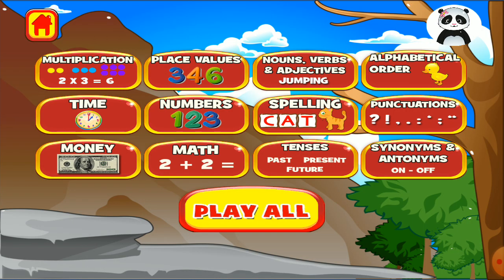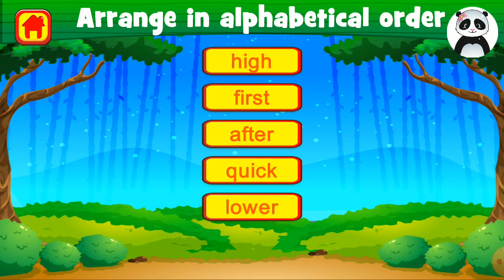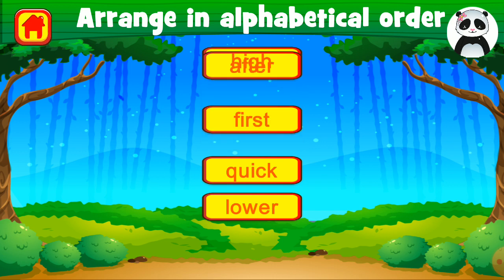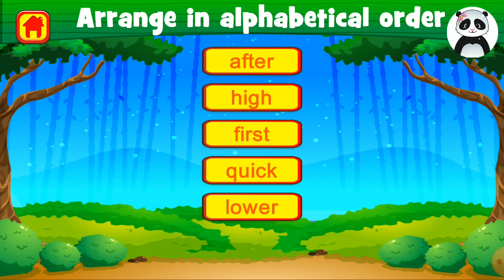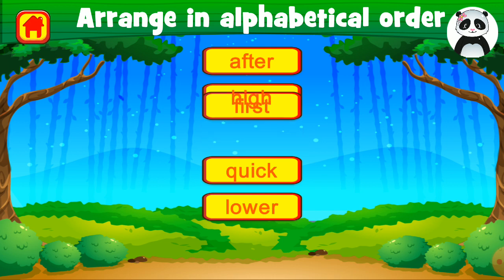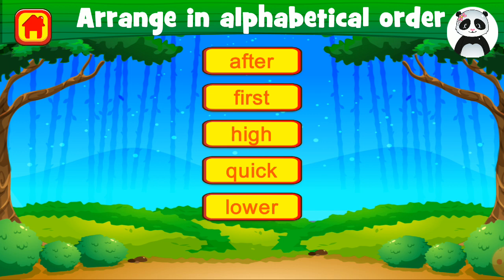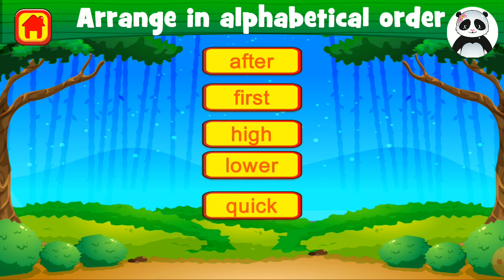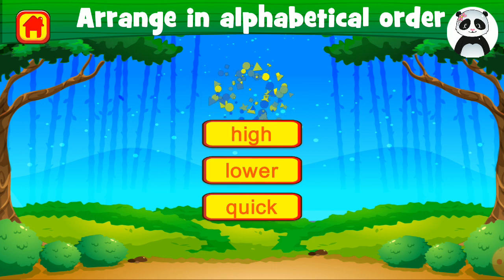Now we are going to solve alphabetical order. Arrange the words in alphabetical order. Number 1: after, because it starts from A. After that: first. After that: awesome. Thank you.